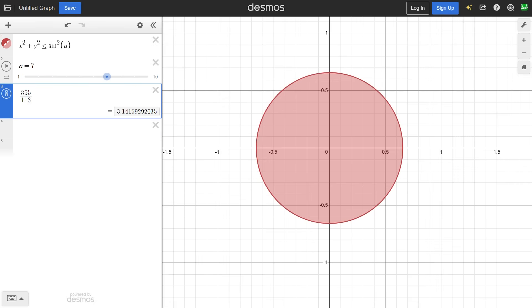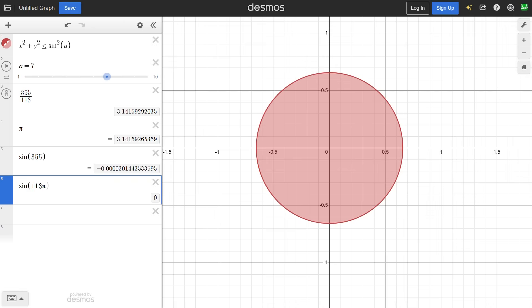Why? Because 355 over 113 is close to pi, 355 is correspondingly close to 113 pi. So sine of 355 will be close to sine of 113 pi, which equals 0, just like every other multiple of pi.